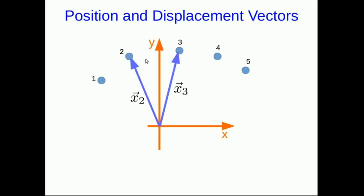A displacement vector points from the starting point during the time period it's talking about to the end point. So the displacement vector for the time from two to three would be this vector here. And we'll see in a moment that these are related in exactly the way we've talked about, that delta x32 is going to be x3 minus x2.